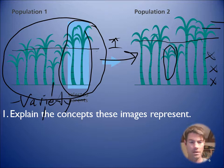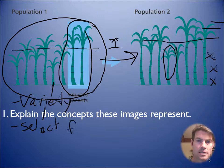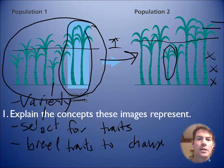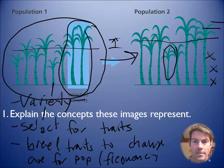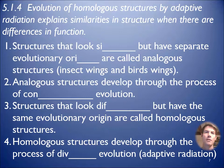So it's really averages that we're talking about here. These images represent how you can select for traits and then do breeding with those traits to change the population average. The word I'm looking for is frequency - the frequency of those different traits, either being tall or shorter or whatever.